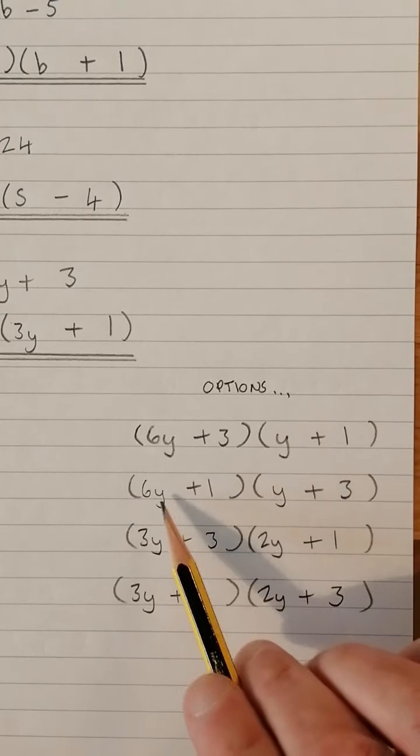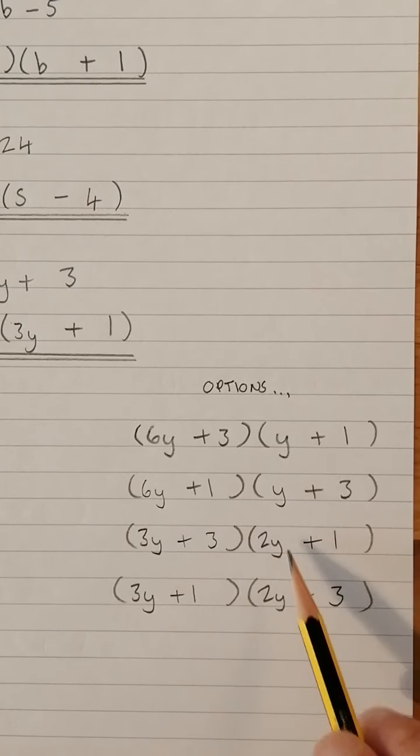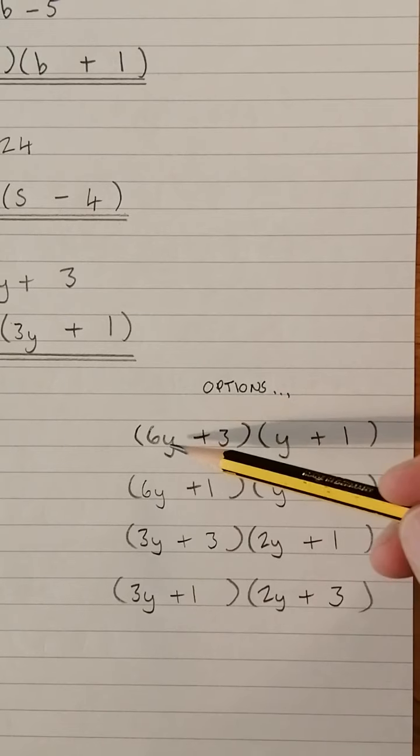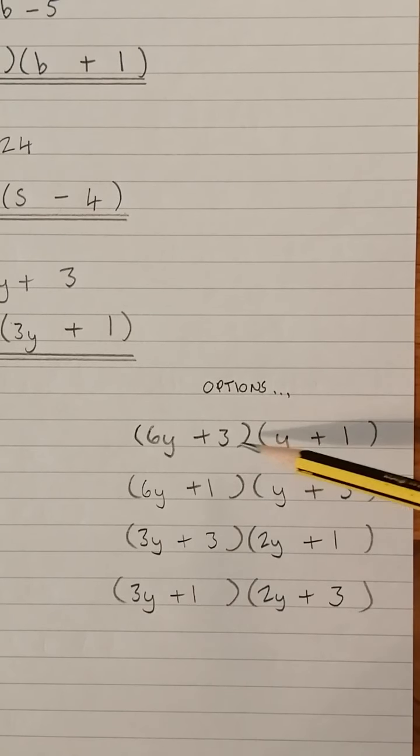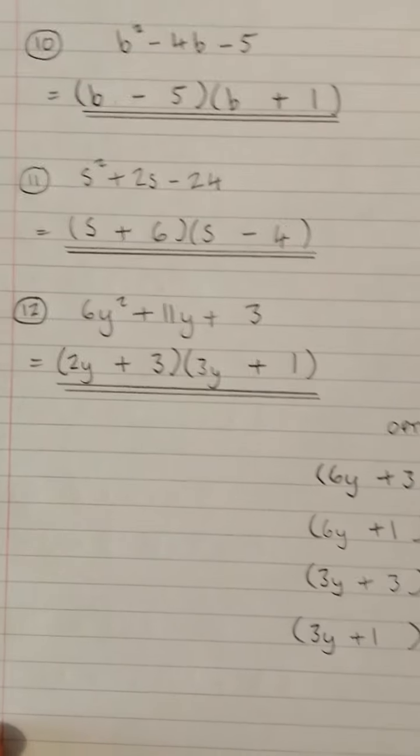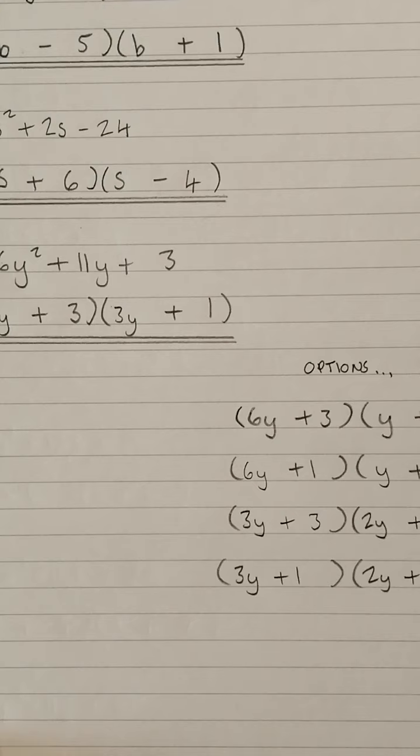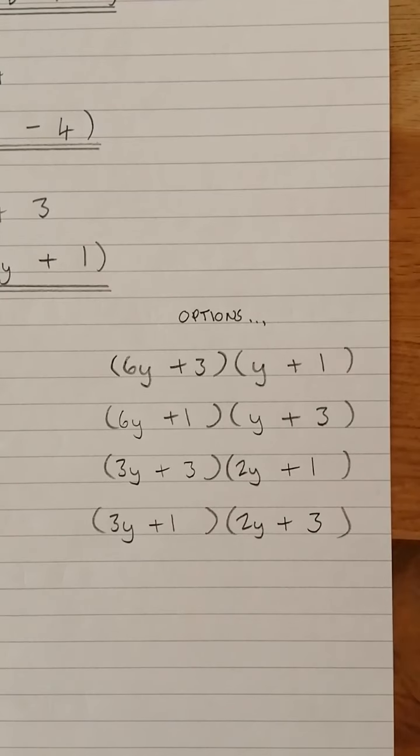The two things multiply to give 6Y²: 6Y times Y, 6Y times Y, 3Y times 2Y, 3Y times 2Y. And you can alternate the +3, +1, +1, +3. So these are all the options of expressions that multiply to give 6Y² and the last two numbers multiply to give +3. 6Y² there and +3 there. But only one of them is going to give you a +11 in the middle there. You can see it there.